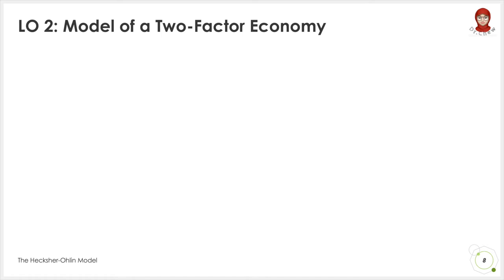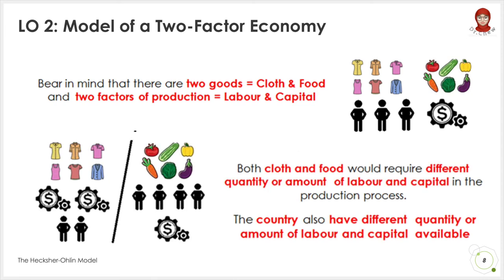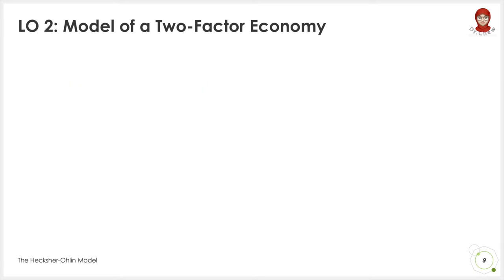Under the two-factor economy, there are two goods, clothes and food, which can be produced with the combination of two factors of production: labour and capital. Recall that one of the assumptions under the Heckscher-Ohlin model states that the mix of labour and capital use are different across sectors — some sectors may use more labour but lesser capital and vice versa. Therefore, both the clothes and food sectors require different quantities of labour and capital. At the same time, the country also has different quantities of labour and capital available for production. Let us see based on a numerical example how the two-factor economy works.